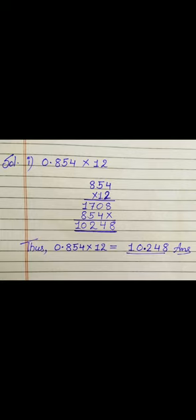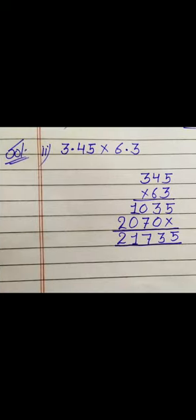Now let's solve the next question. It is 3.45 into 6.3. Again, first we will multiply the numbers without decimal: 345 into 63, and we will get 21,735. Now as you are seeing in the question, the first number has 2 decimal places and the second number has 1 decimal place. We add these, so the total number of decimal places is 3. We mark the decimal after 3 digits in our final result, giving us 21.735.